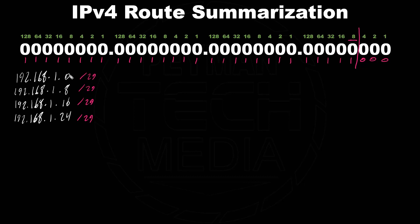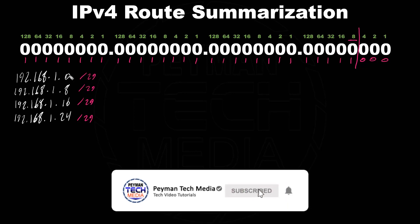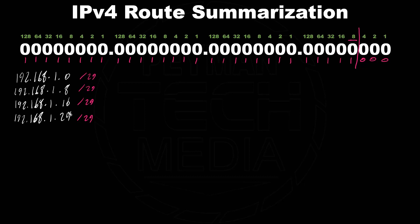So we know these subnets are in continuous format, therefore we should be able to do route summarization. The quick answer is we need to find which block can cover all these addresses. To get more detail, we need to take the numbers that are different, convert them to binary, and see how many bits are exactly the same.